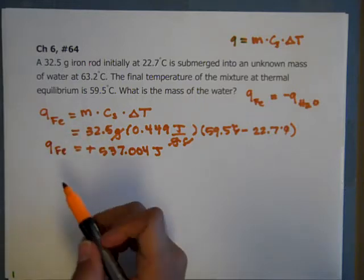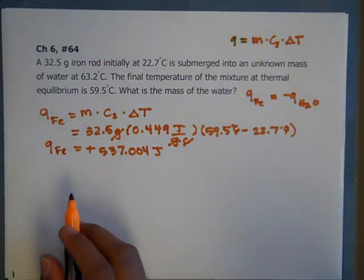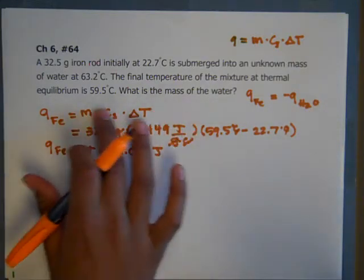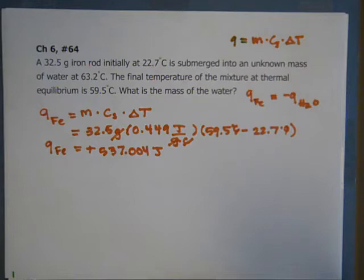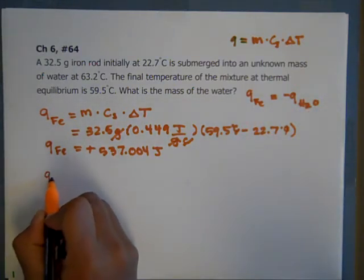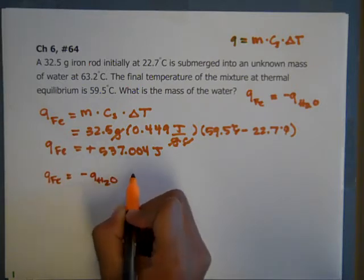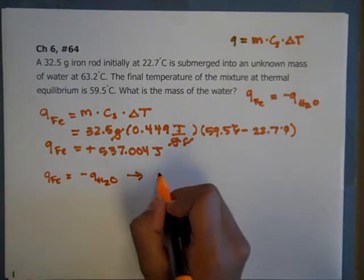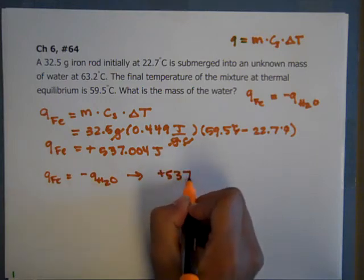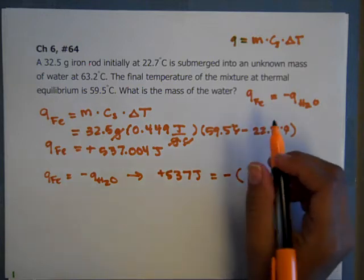Now, remember what we said. We said Q of iron is the negative Q of water. So the Q of water is going to be the same formula. Q is always MCAT. So we're going to use this equation, and we know that Q of iron is going to be negative Q of water. And so that can be replaced with positive 537 joules is going to equal a negative Q of water,